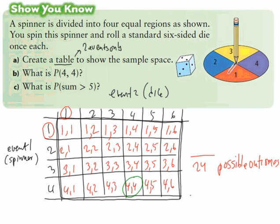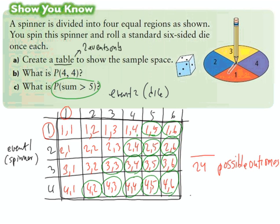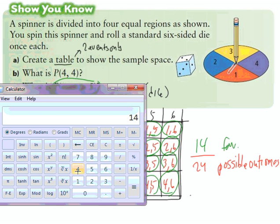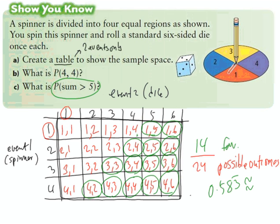Question C asks: what is the probability of a sum greater than 5? We look at the combinations in the table — for example, 1 plus 4 equals 5, but that's not greater, so we don't include it. We circle all combinations where the two numbers add up to more than 5. All the green circled ones have a sum greater than 5 — that gives us 14 favorable outcomes out of 24. As a decimal, 14 divided by 24 equals 0.583 repeating, or approximately 58.3 percent. So more often than not, the sum of those two events is going to be greater than 5.